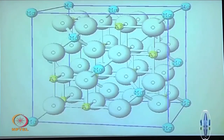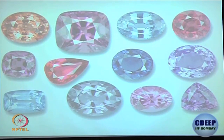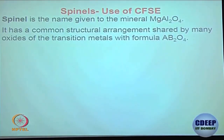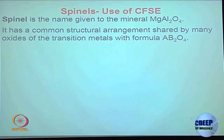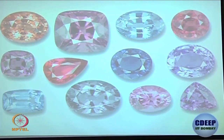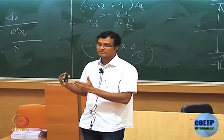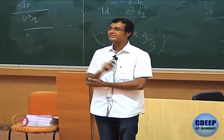The next topic will be spinels. Spinels are the gems you see — different metal oxides with the formula AB₂O₄, for example MgAl₂O₄ (one magnesium, two aluminium, four oxygen). These are the jewels and rocks you see — they are spinels. Spinels are of two types: normal spinel and inverse spinel. This is the only topic left for this chapter on coordination complexes.